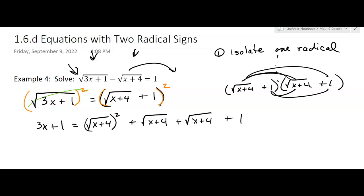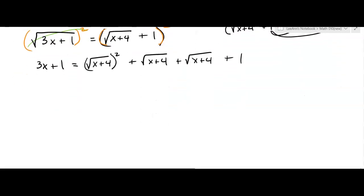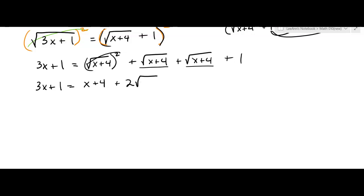Then the last 1 times 1 gives 1. So now we have 3x plus 1 on the left. The square root squared gives x plus 4, and the two middle square root of x plus 4 terms combine to give 2 times the square root of x plus 4.